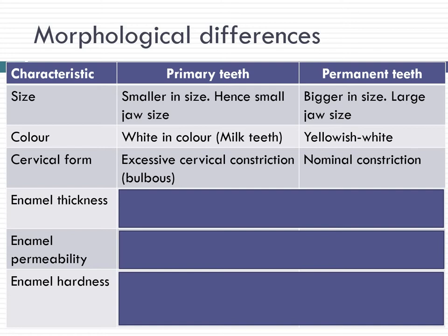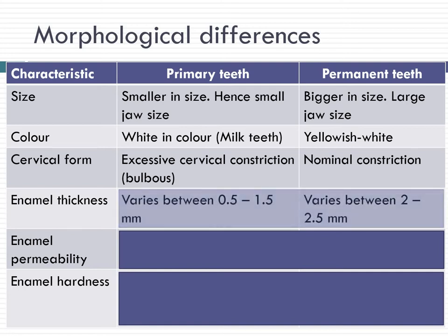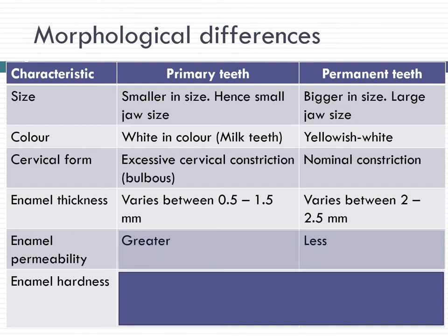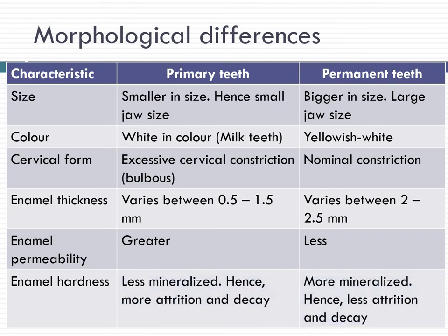In permanent teeth the cervical constriction is not so prominent. The enamel thickness varies from 0.5 to 1.5 mm in primary teeth whereas it is up to 2.5 mm in permanent teeth. Permeability is also greater in primary teeth, making primary teeth more prone to dental caries as it easily allows penetration of the acidic environment. The primary teeth is less mineralized and more prone for attrition and decay, whereas permanent teeth is more mineralized with less chance of attrition.